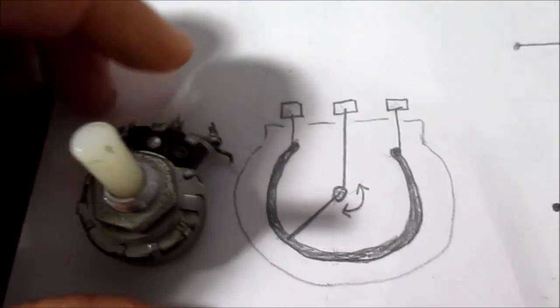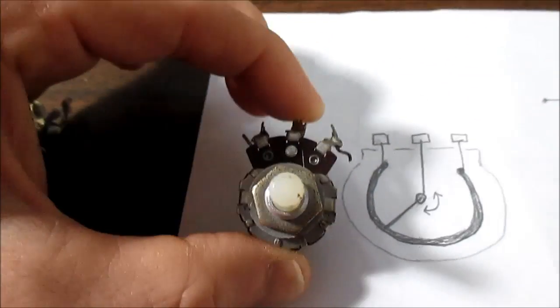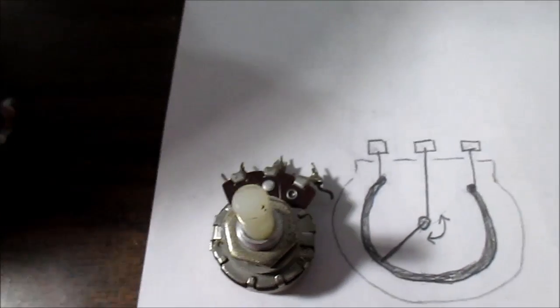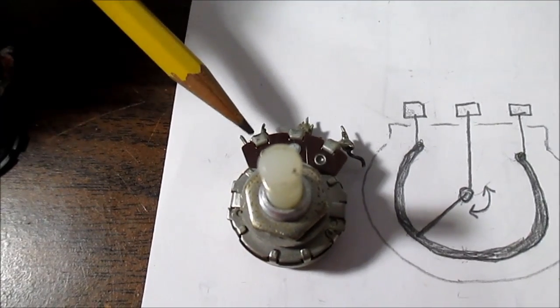That's with the potentiometer facing towards you like this here. So this lug on the right would be ground, amplifier input, and audio source.